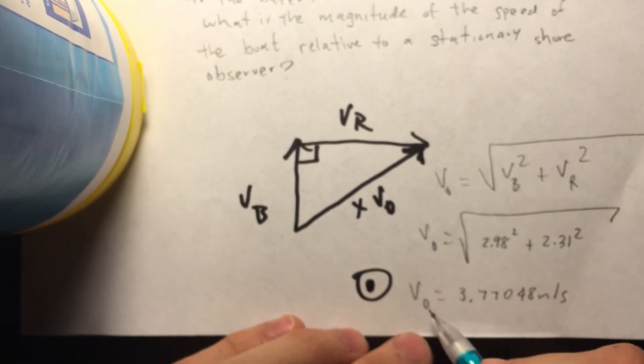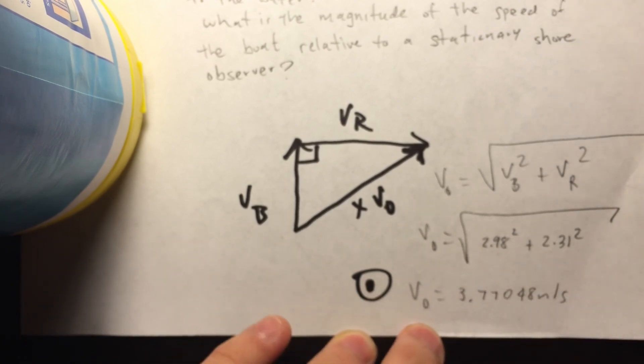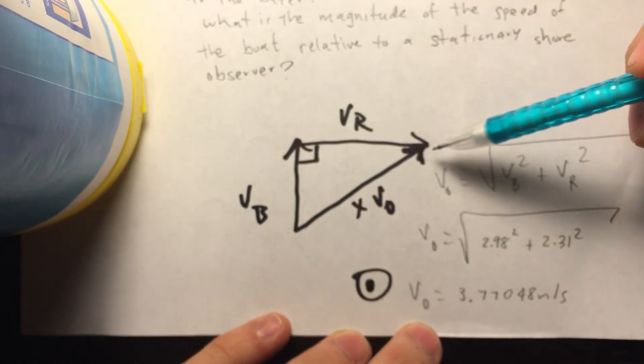So, as you can see, the velocity relative to the observer is actually much bigger than that of either the boat or the river going downstream.